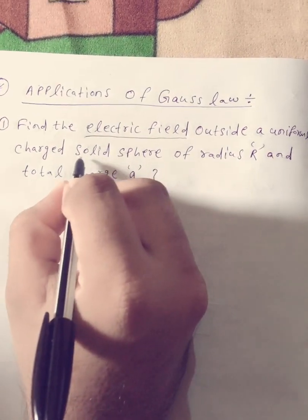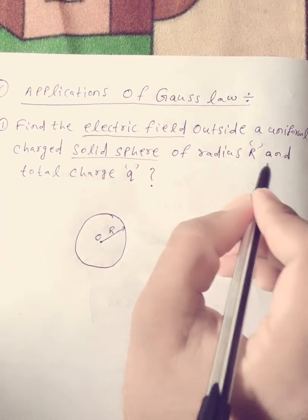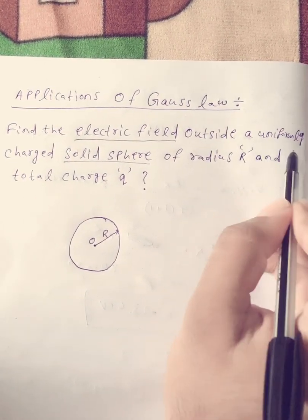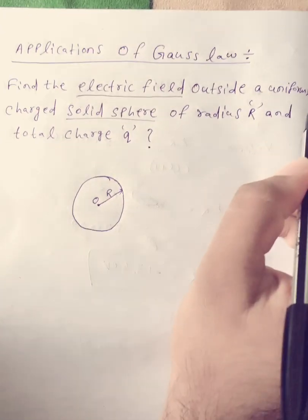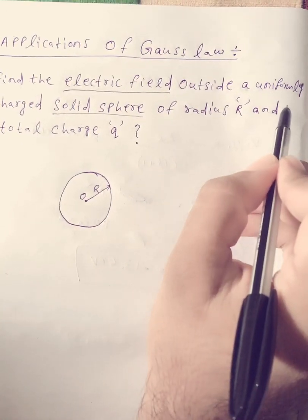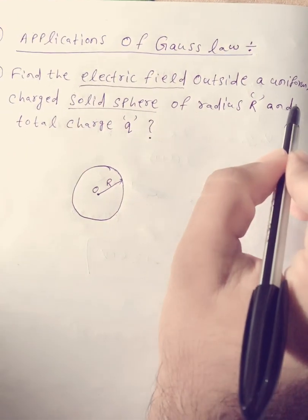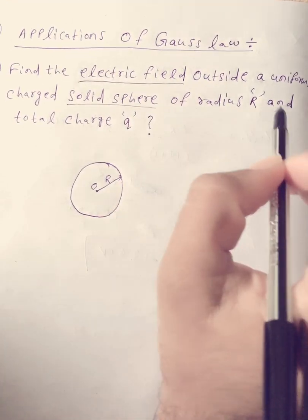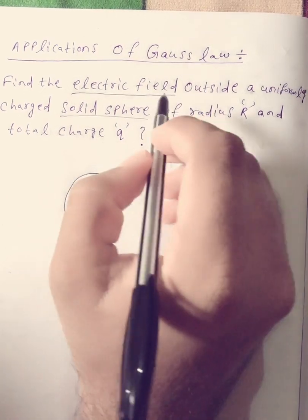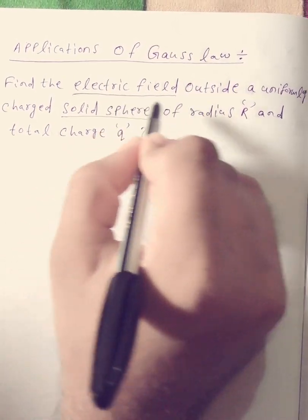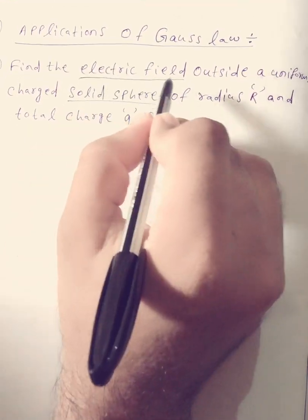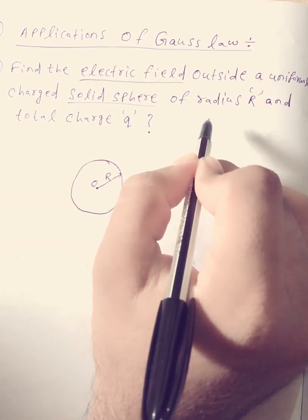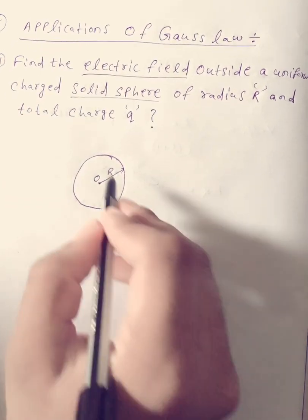We are finding the electric field outside a uniformly charged solid sphere. One important thing: if the charge is not uniform, you cannot apply Gauss's theorem. The charge must be uniform over that sphere. Our question is to find the electric field outside a uniformly charged solid sphere of radius R.